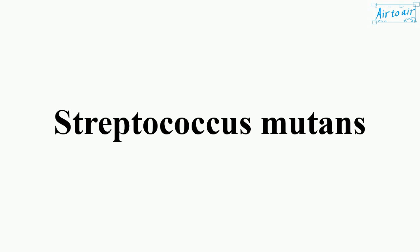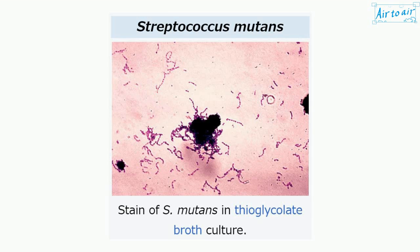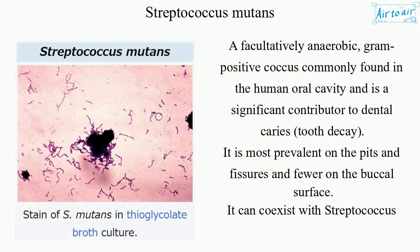Streptococcus mutans is a facultatively anaerobic, gram-positive coccus commonly found in the human oral cavity and is a significant contributor to dental caries, tooth decay.